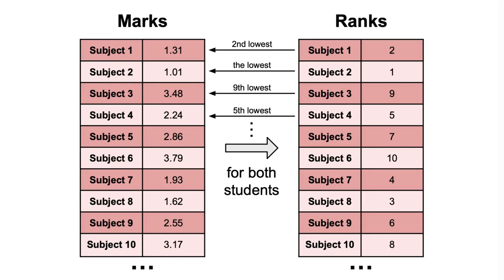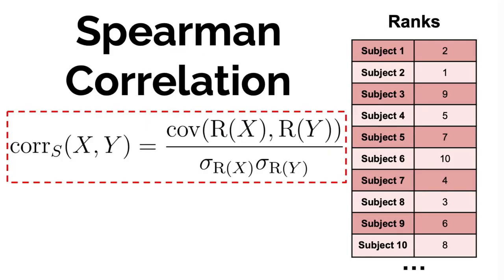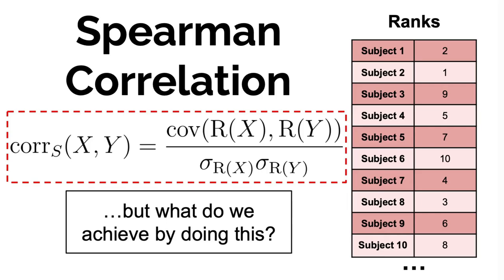Thus, to compute a Spearman correlation, you first assign ranks to each data point in both variables, and then you compute the Pearson correlation of the result. So we take the covariance of the rankings, and then we divide it by the standard deviations of the two. So what do we achieve by this?